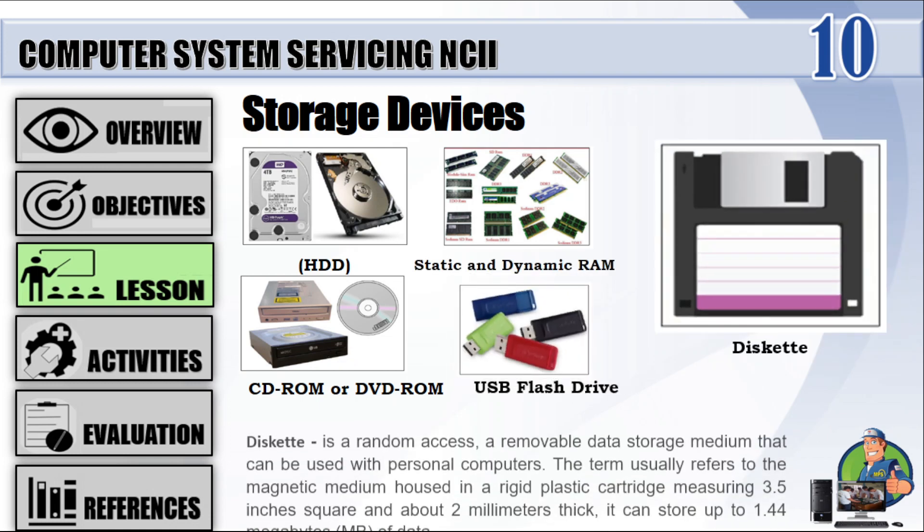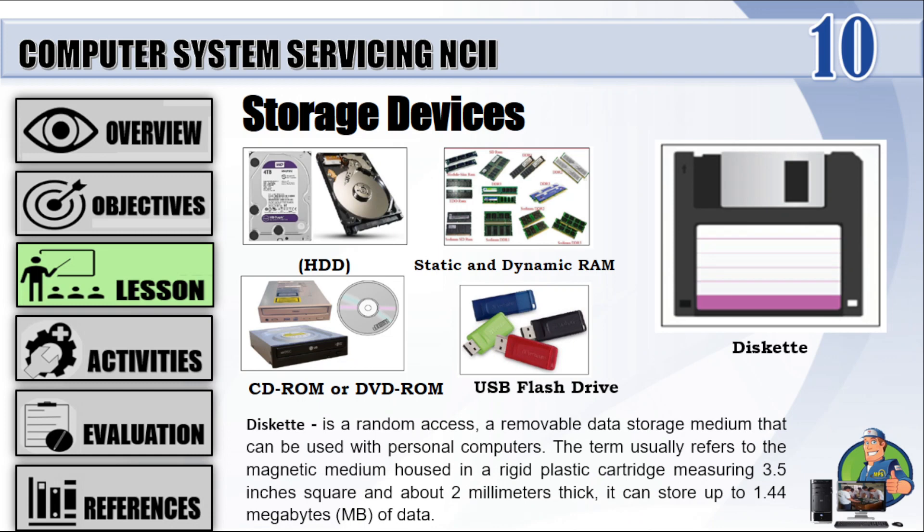The diskette is a random access, removable data storage medium that can be used with personal computers. The term usually refers to the magnetic medium housed in a rigid plastic cartridge measuring 3.5 inches square and about 2 millimeters thick. It can store up to 1.44 MB of data.